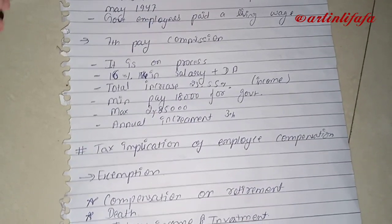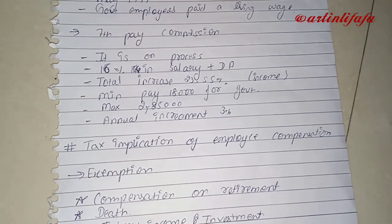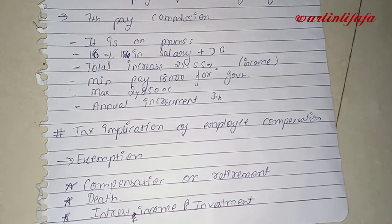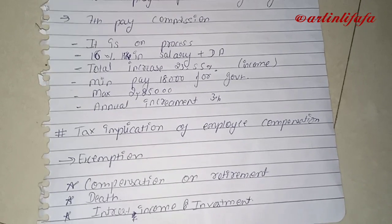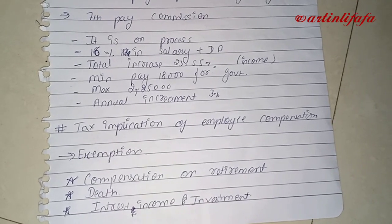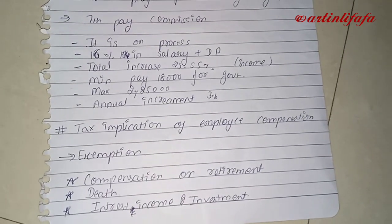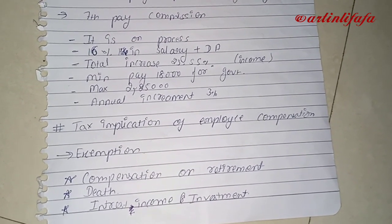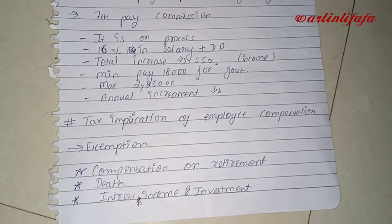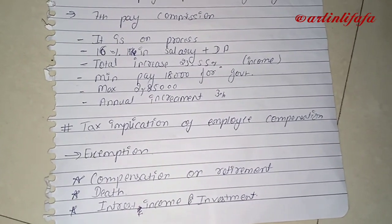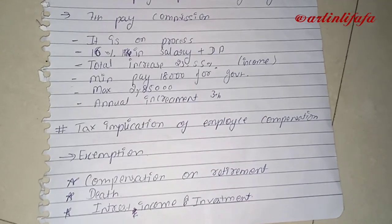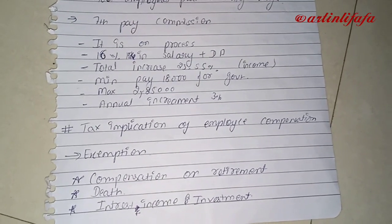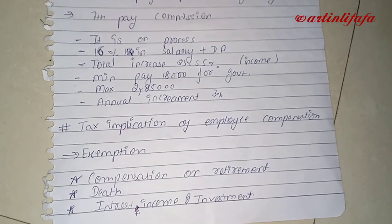Regarding the 7th Pay Commission, which is currently in process: it recommends a 16% increase in salary plus Dearness Allowance (DA), resulting in a total income increase of 23.55%. The minimum pay for a government employee is set, and the maximum is 2,25,000. There is also an annual increment of 3% increase.